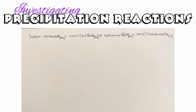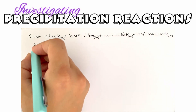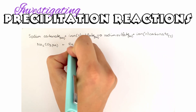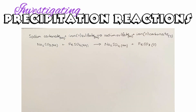Before you get to the ionic parts of the equations, you should be writing a full balanced chemical equation first. So we've got sodium carbonate and iron(II) sulfate. This is our full balanced chemical equation, and now we're going to write our ionic equation.